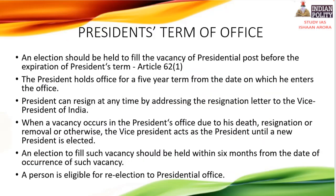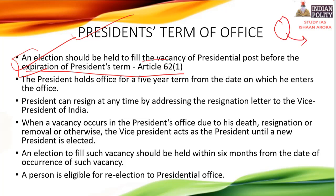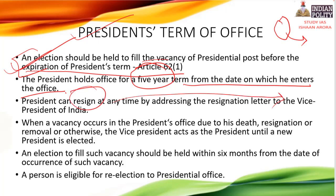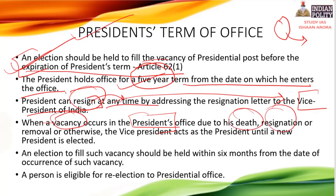Article 62 states that the election should be held to fill a vacancy before the expiration of the President's term. The normal term is five years from the date of entering office. The President can resign at any time by writing to the Vice President of India. If a vacancy arises due to death, resignation, removal or otherwise, the Vice President acts as President until a new President is elected.